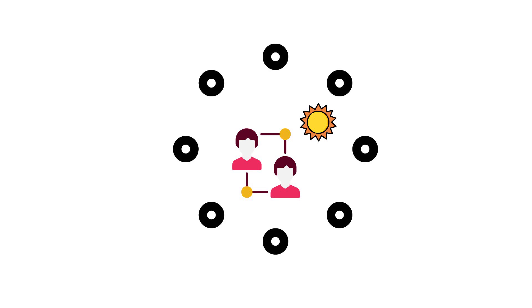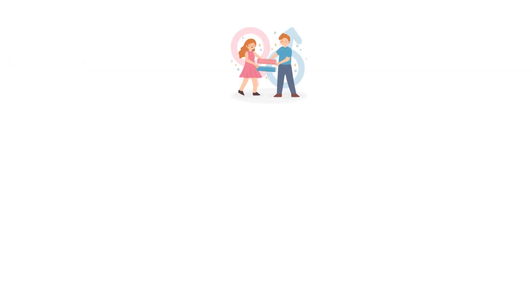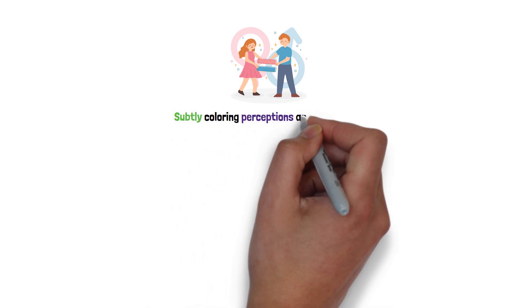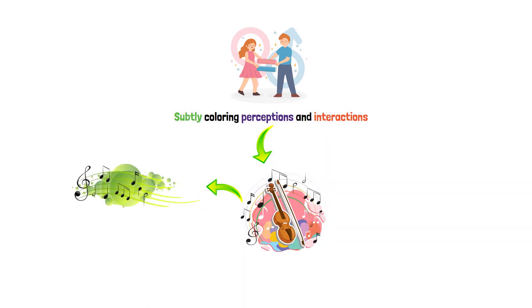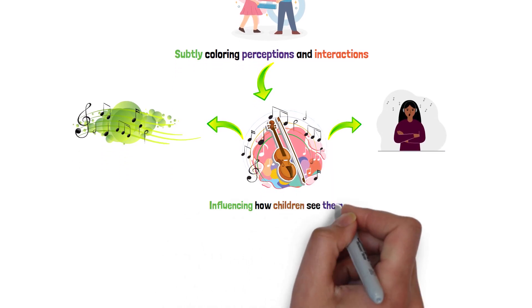Peer relations become the sun around which children's social worlds orbit. Friendships are more than just playmates. They're mirrors reflecting a child's own self. Gender socialization is also at play, subtly coloring perceptions and interactions. It's like a cultural melody, sometimes harmonious, sometimes off-key, influencing how children see themselves and others.